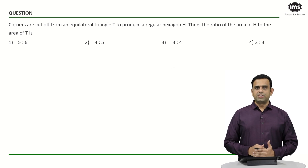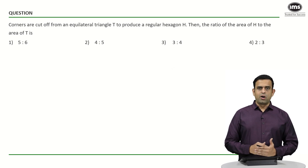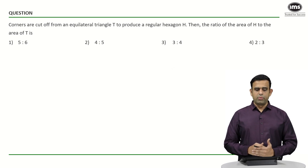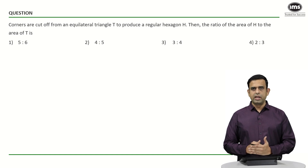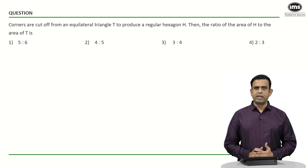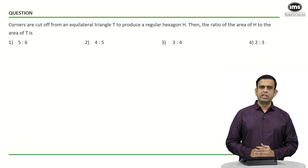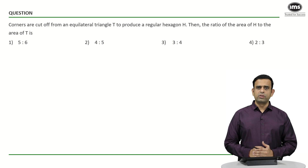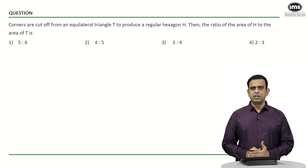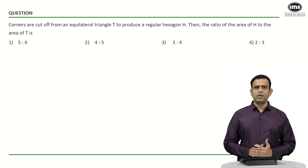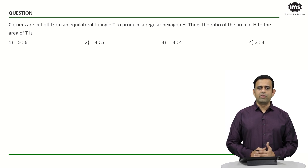In this question, the corners are cut off from an equilateral triangle T to produce a regular hexagon H, and the objective is to find the ratio of the area of the hexagon to that of the area of the triangle.